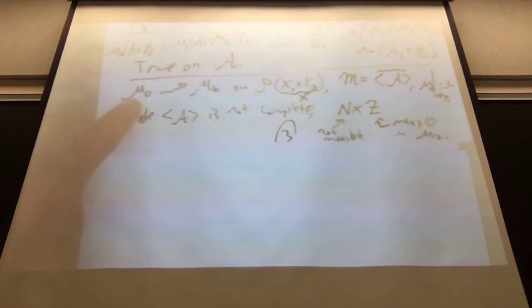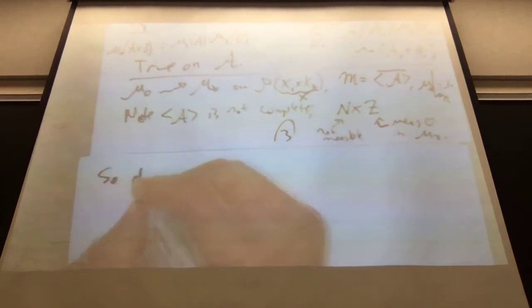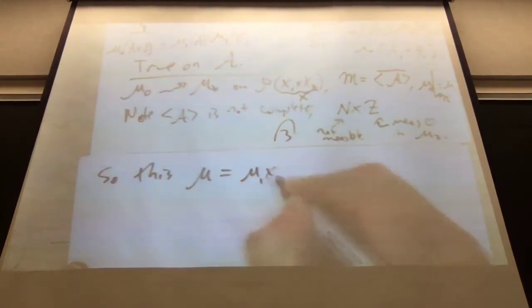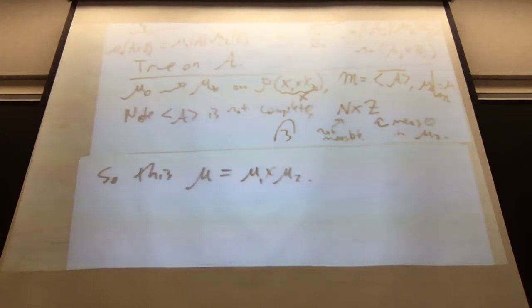There's a general theorem: from a pre-measure on an algebra, you can generate a measure and complete that measure. So when I write mu_1 cross mu_2, that doesn't mean I'm only measuring rectangles. You take the rectangles, extend to finite unions of rectangles — that gives a pre-measure — run the Carathéodory program through, and that gives the measure mu_1 cross mu_2.